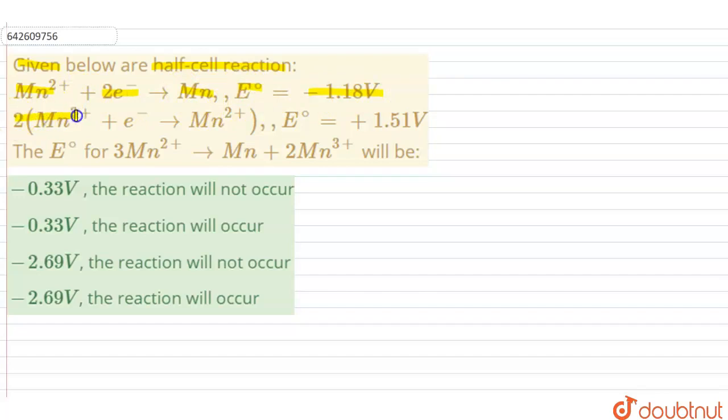Whereas twice of Mn³⁺ plus electron giving us Mn²⁺, the whole reaction E⁰ has been given as plus 1.51 volts. So the E⁰ for 3Mn²⁺ giving us Mn plus 2Mn³⁺ will be. We have been given four options as well as the possibility of occurrence of the reaction needs to be predicted.